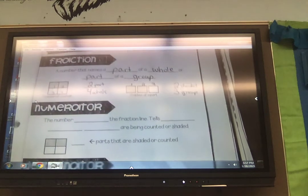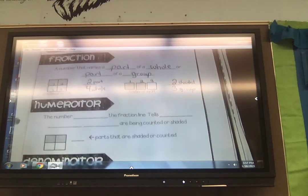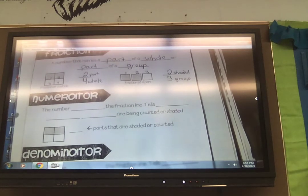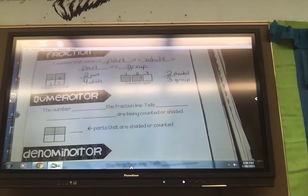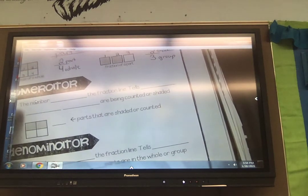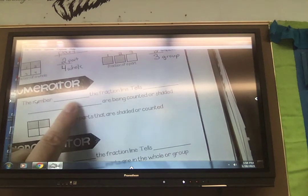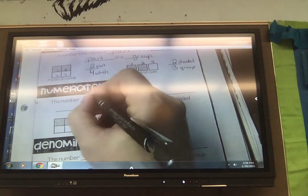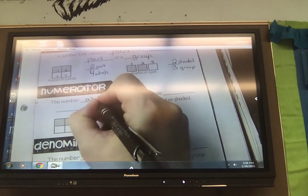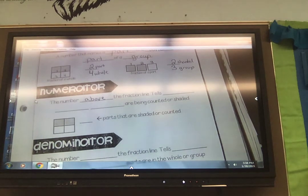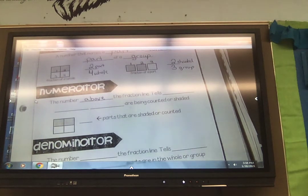All right, let's talk about the name of each part of my fraction. So in the middle, you see the word numerator. Everybody say that. Numerator. What is the numerator? The numerator is going to be the number above. Now above means on top. The number above the fraction line. So it's always on top.